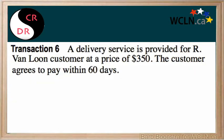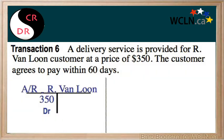A delivery service is provided for R. Van Loon, a customer, at the price of $350. The customer agrees to pay within 60 days. If a customer agrees to pay later, that is automatically an accounts receivable. Accounts receivable, an asset account, increases on the debit side, so you have a debit entry of $350.